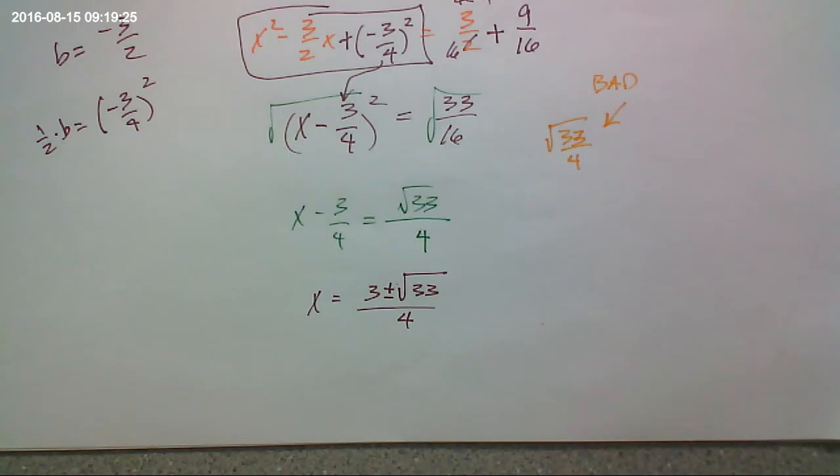And last step. Add 3/4, right? And remember, there's two answers. There's a positive and a negative of the square root. And that's it. It doesn't say to round it or anything. Just said solve. So, there you go. Solve. Two answers. Who's got a question? Anybody got a question?